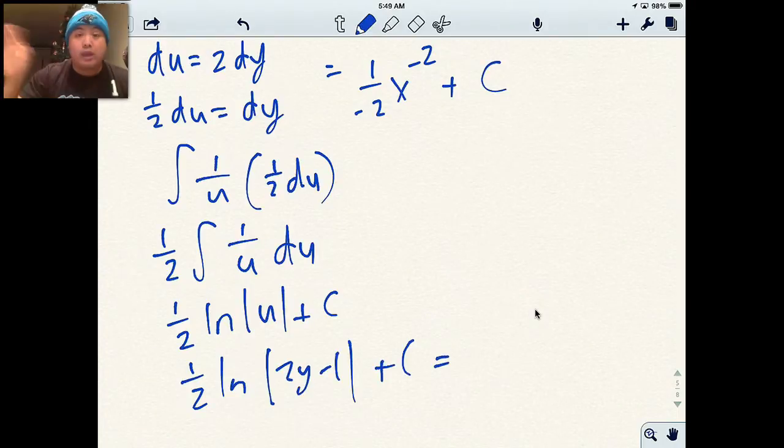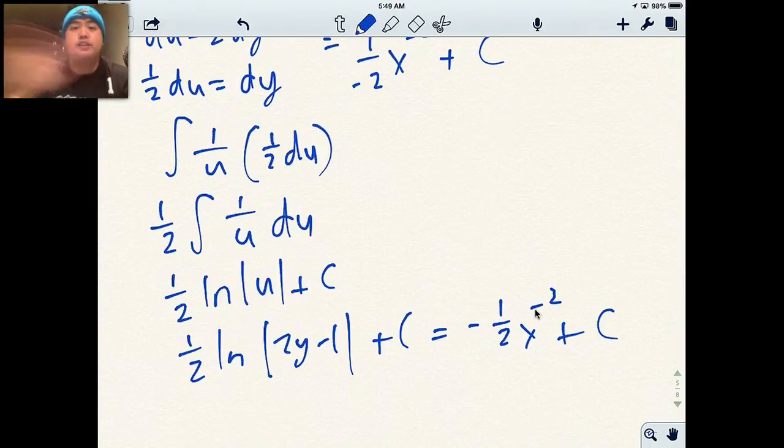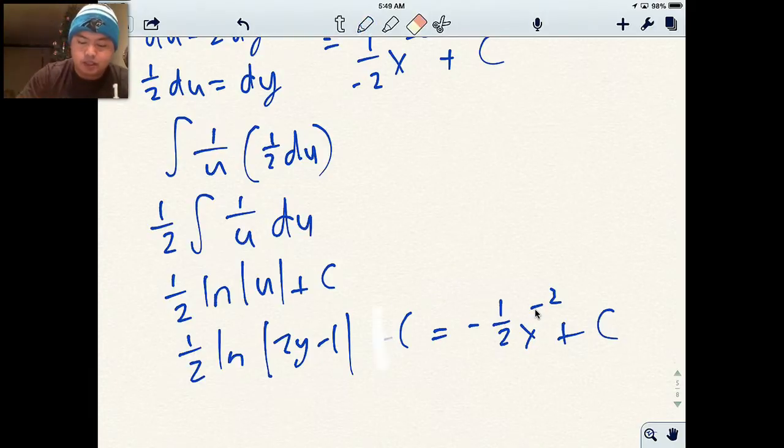And then I'm going to put the right side of what I put, negative half x to the negative 2 plus c. What I do next is I move the c's to one side. It may be confused, like if I subtract c from one side, doesn't that cancel on both sides? They're just two different constants. So one can be 3 and one can be 5, they're just two different numbers. I'm going to move all the c's over onto one side.